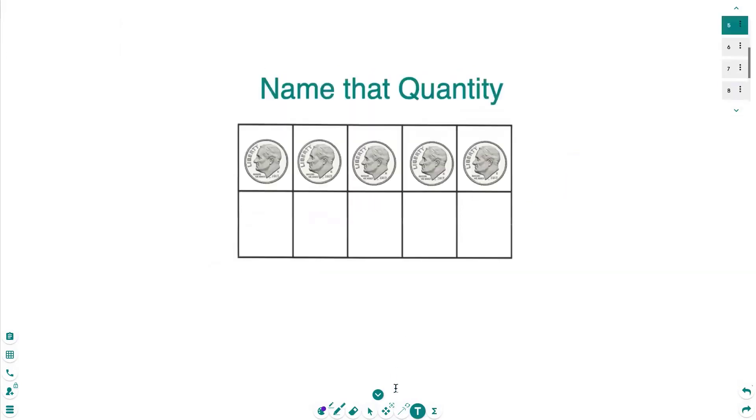And next, I have placed dimes in my tens frame. I know that one dime is worth ten cents, and I have ten, twenty, thirty, forty, fifty cents for one row of dimes.